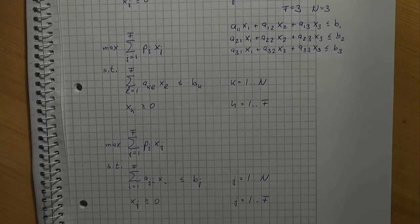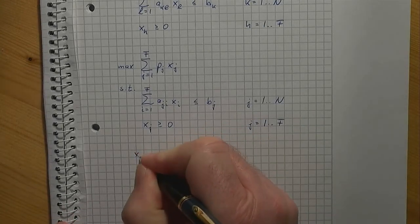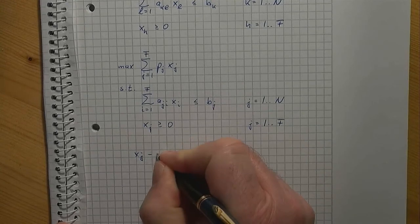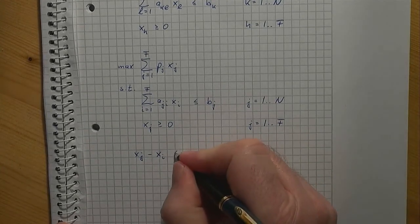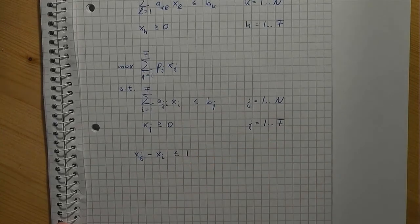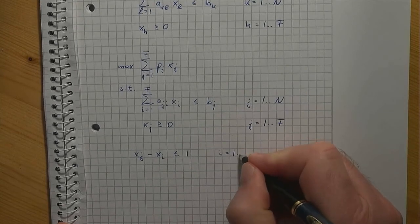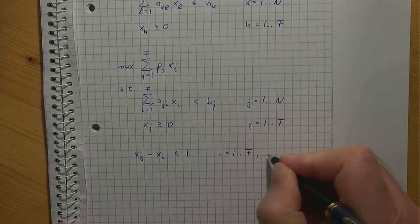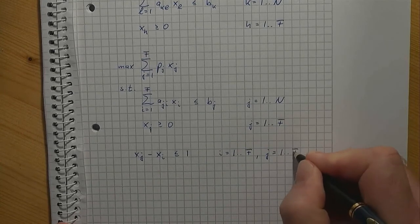Here is a solution: xj minus xi is less than or equal to 1 for all i from 1 to f and all j from 1 to f.